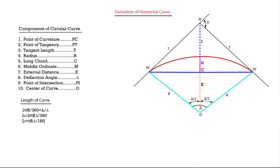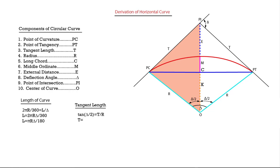The tangent length is derived from a right triangle. The PC line is perpendicular to the tangent line. The angle at PI is delta over 2, and there is a right angle in the triangle. Therefore, the tangent of delta over 2 is equal to T — the opposite side — divided by R, the adjacent side.